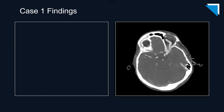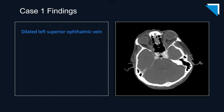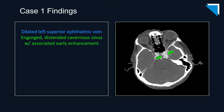We can appreciate the engorgement of the left superior ophthalmic vein. The presence of intravenous contrast reveals an abnormality in the cavernous sinus that was inconspicuous on the non-contrast images. The cavernous sinus is engorged and distended and demonstrates early enhancement. This constellation of findings is consistent with a carotico-cavernous fistula.